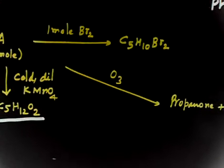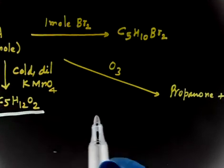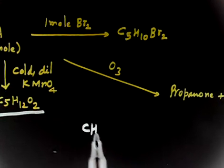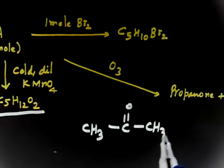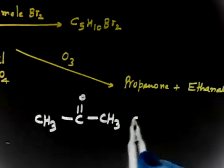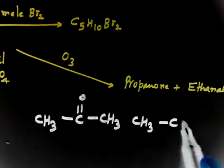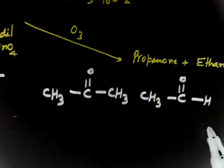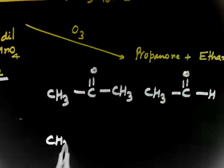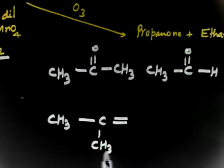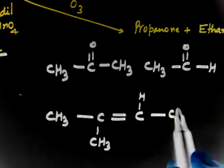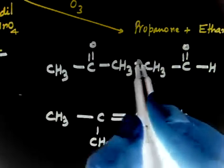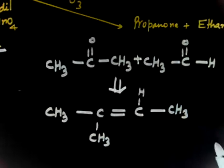Propanone is a ketone containing 3 carbons — same as acetone: CH3-CO-CH3. Ethanal is CH3CHO. If you join these two fragments at the carbonyl carbons, you get CH3-C(=CH-)CH3 on one side and CH-CH3 on the other side, giving 2-methylbut-2-ene. So this is compound A.